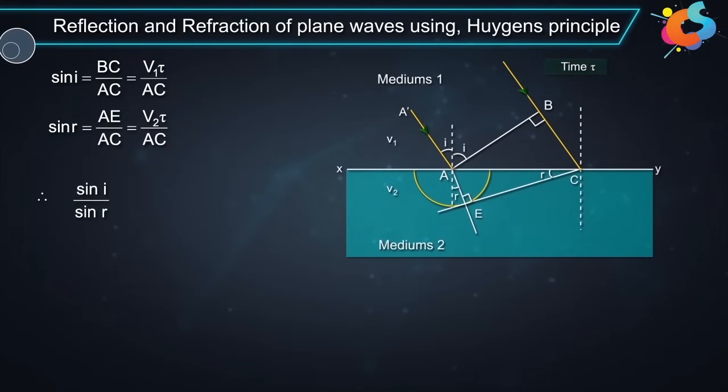Therefore, sin I divided by sin R is equal to V1 tau divided by AC divided by V2 tau divided by AC. This is equal to V1 by V2.